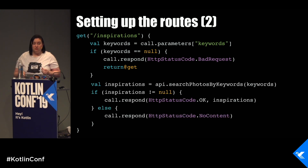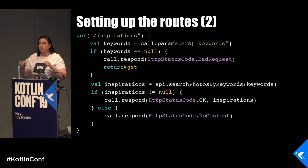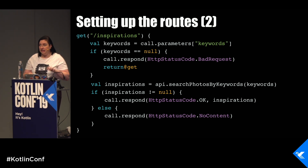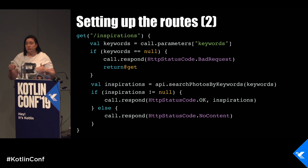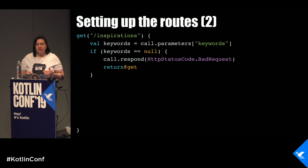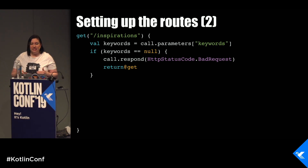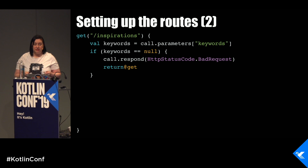But if the keyword is not null, we go ahead and search the Unsplash API with our keywords. If we get some results, the status is OK and we hand the inspirations through. But if we couldn't find anything — if I typed in 'asdf', I'd get nothing from Unsplash because what does an asdf picture look like — then we respond with no content. This looks okay, but it can actually get better. Let's have a look at two refinements we can make on this routing code.